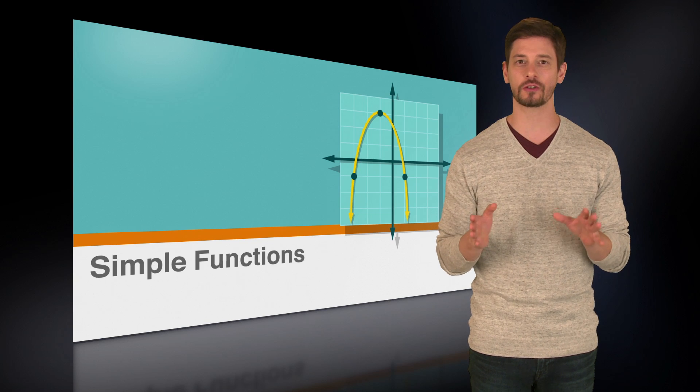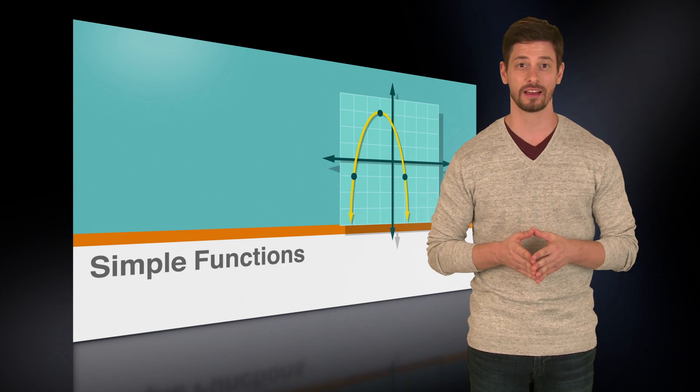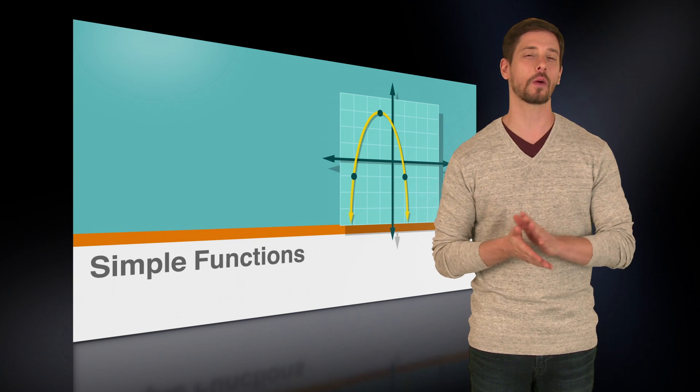On the ACT, you might encounter two types of simple functions: the equation and the graph. Let's look at equations first.